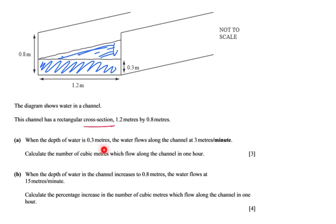When the depth of the water is 0.3 meters, and that is the case now, as you can see 0.3 by 1.2, the water flows along the canal or channel at 3 meters per minute. And that is in bold, so you should be shouting to yourself 3 meters per minute. That must be important. Calculate the number of cubic meters which flow along the canal in one hour. So this is per minute, and they're asking me how much water will leave it in an hour. So that's 60 times whatever the amount of water leaves per minute.